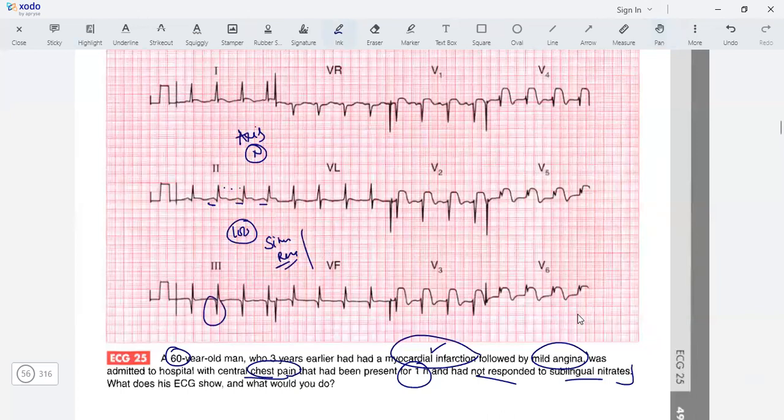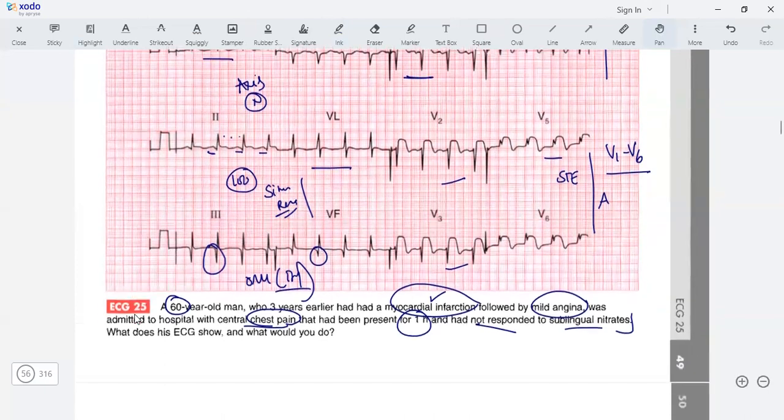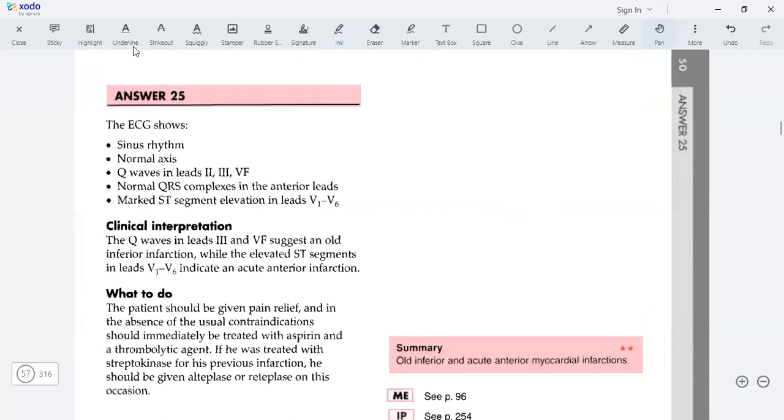The axis is normal. Looking at 2, 3, AVF - there's some Q in lead 2, but the Q is more prominent in 3 and AVF, could be an old inferior MI. Lead 1 shows flattening of the T wave. V5 V6 have definite ST elevation. ST elevation is present from V1 to V6 - definite ST elevation all through V1 through V6. This is a STEMI. There's some Q in V1. This is acute STEMI involving the anterior and also some lateral area. This is extensive anterior STEMI. The patient needs to go through a STEMI protocol.